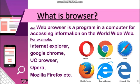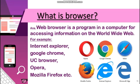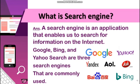Now, what is a web browser? A web browser is a program on a computer for accessing information on the worldwide web. In simple words, a browser is an application to access the internet. Some main browsers shown on your screen are Internet Explorer, Google Chrome, UC Browser, Opera, Mozilla Firefox, and many more.